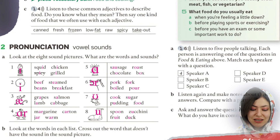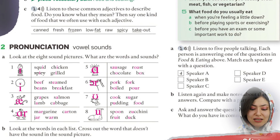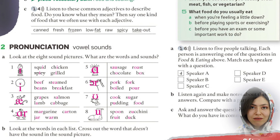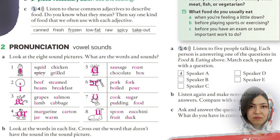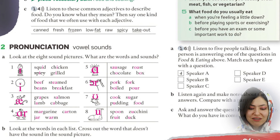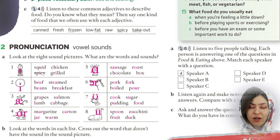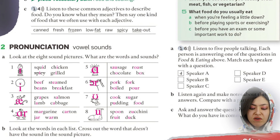Salmon, lamb, and cabbage all have the short A sound. The next vowel sound is 'R': margarine — correct; carton — correct; jar — correct. Worm is the odd one out because it has the 'or' sound, not the R sound. Number five has the short O sound: sausage and chocolate and box are correct, while roast is the odd one out.